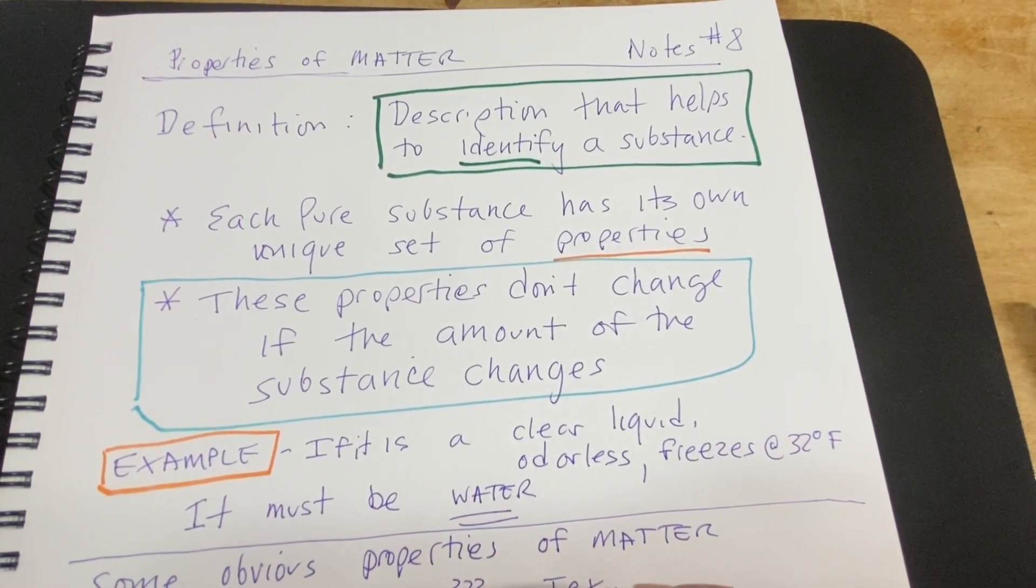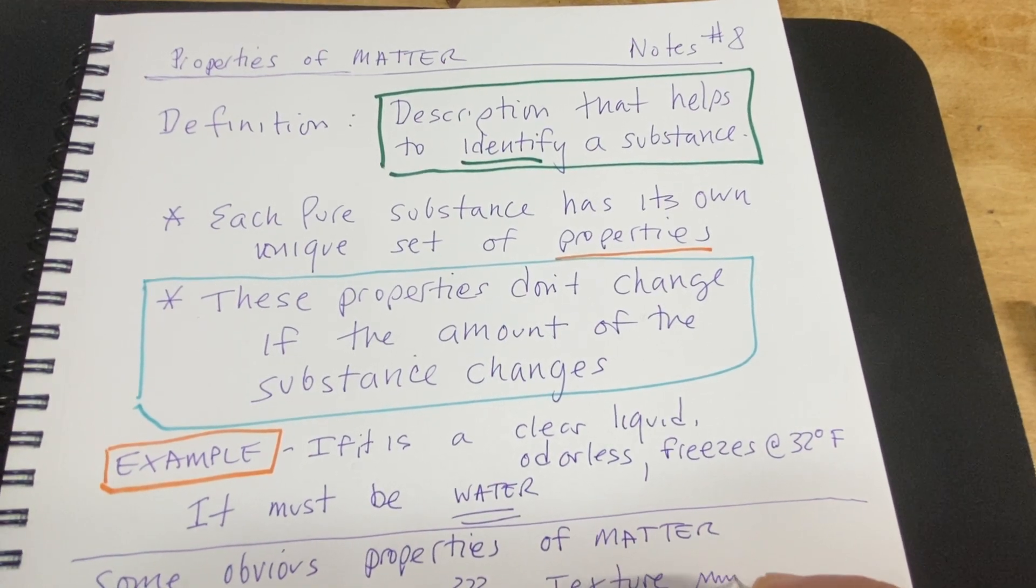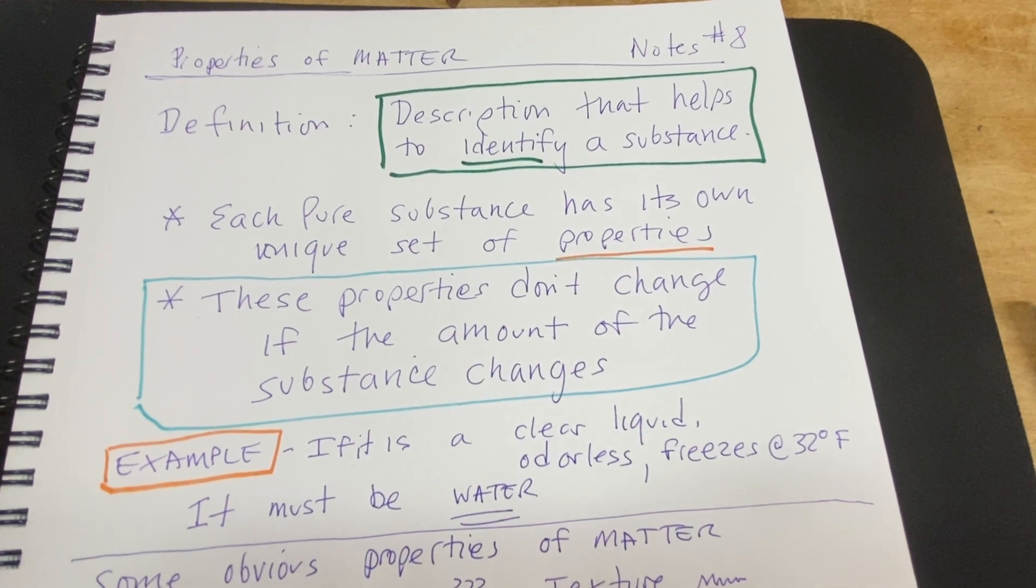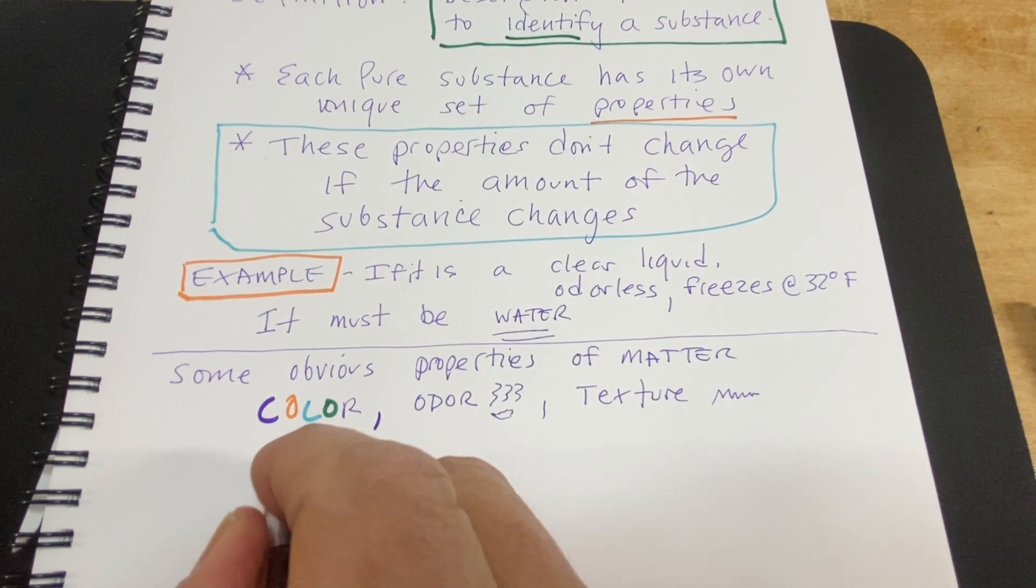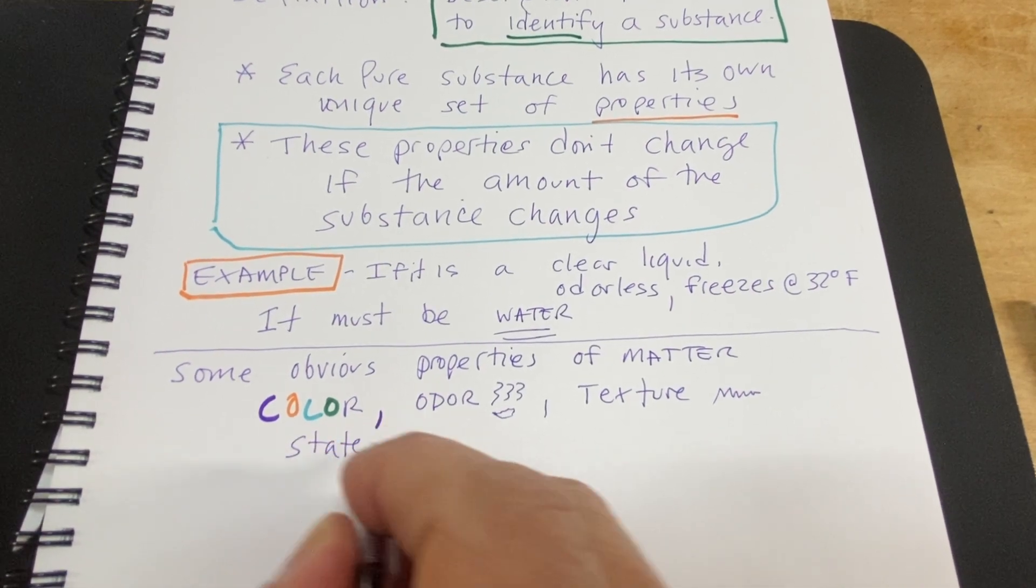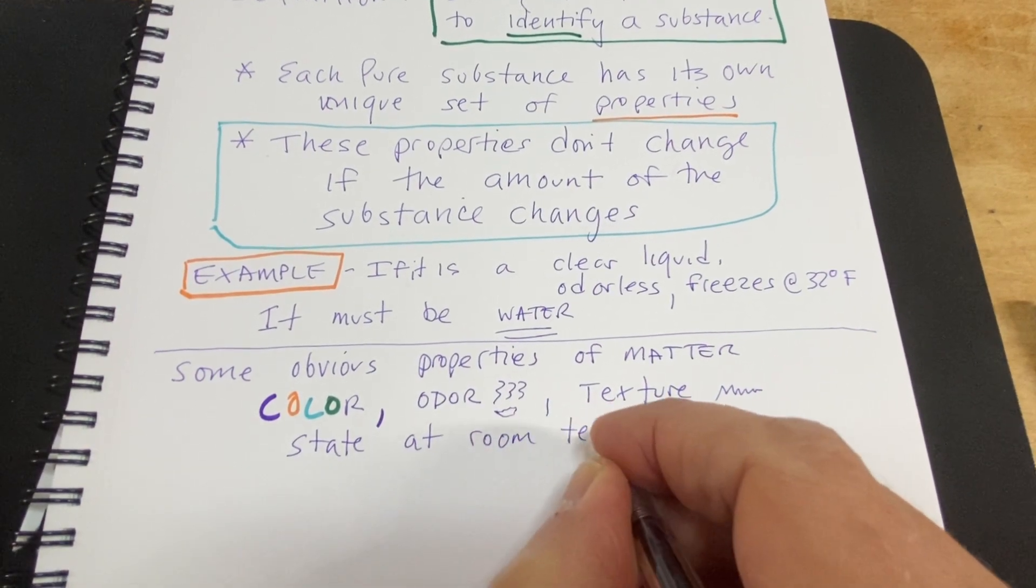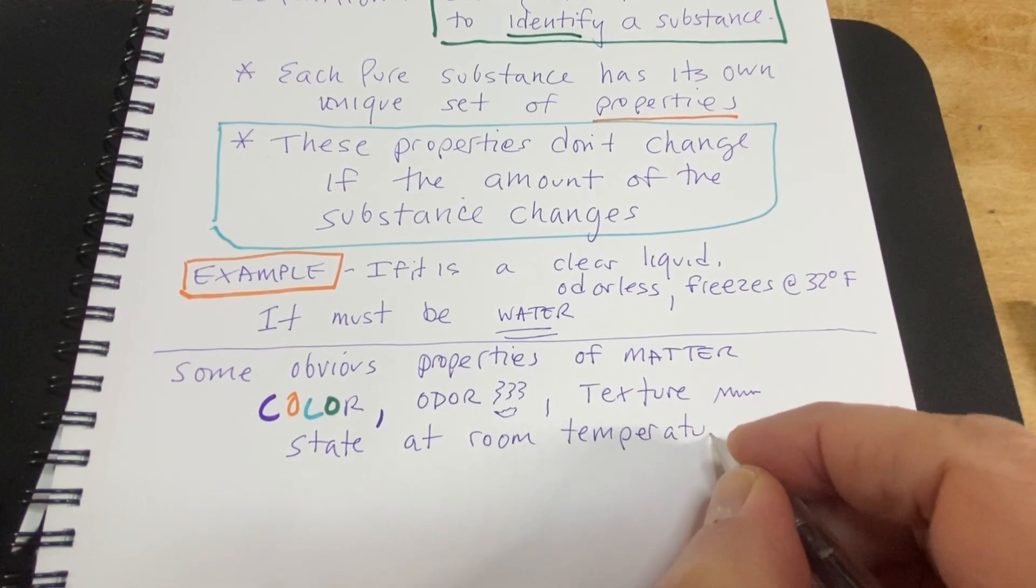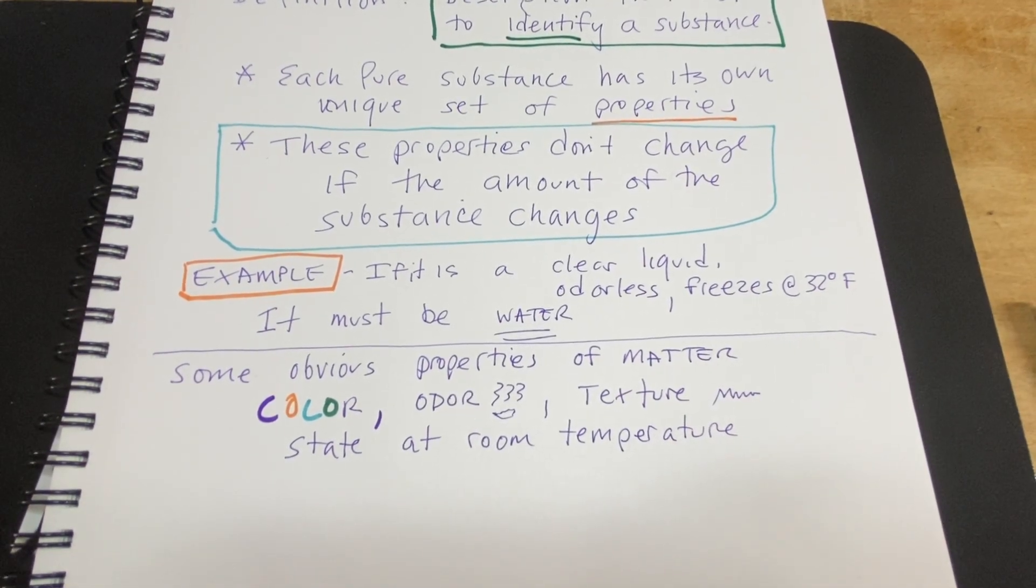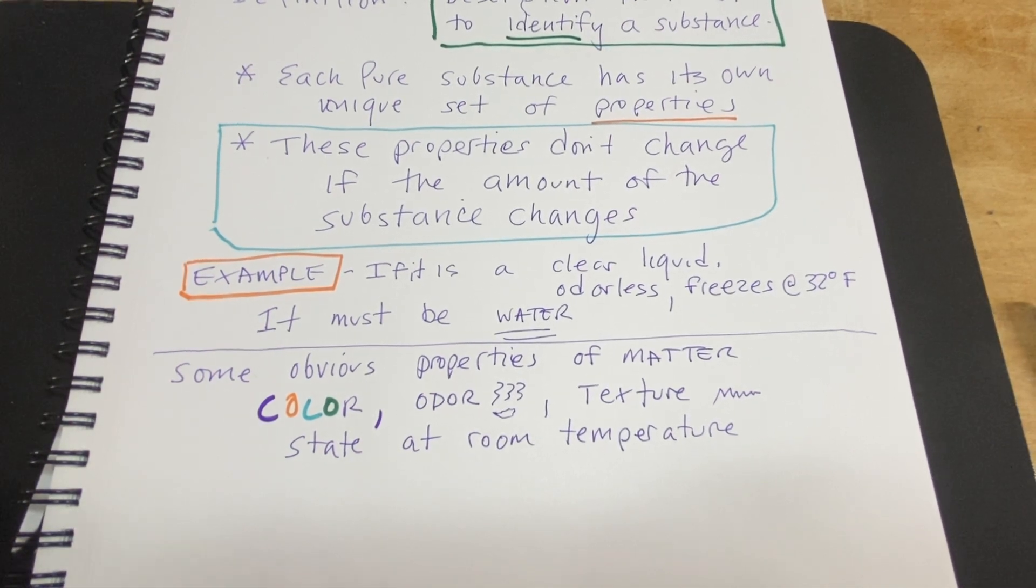How it feels to the touch would be a property - if it's rough or smooth. And then one that's a little more scientific is the idea of a state of matter at room temperature. In other words, is it a solid, is it a liquid, is it a gas? We should be able to tell that obviously. We'd look at it at room temperature, and we can usually tell by looking or feeling if it's a solid, liquid, or a gas.